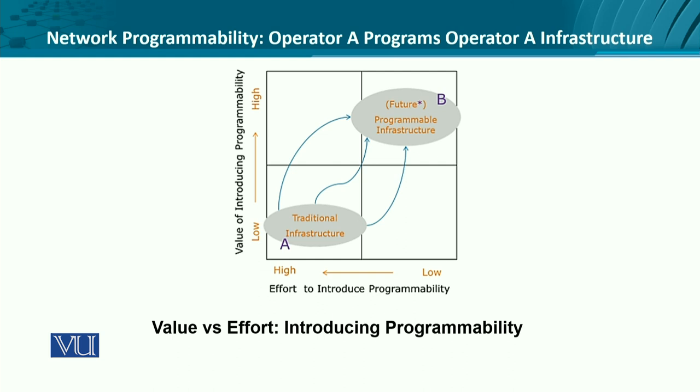This is a four-quadrant representation with high and low levels of programmability on one axis and high and low levels of value introduced by programmability on the other. We are not interested in quadrants C and D — these involve low programmability with low value, or high programmability with low value — so we are going to ignore them.